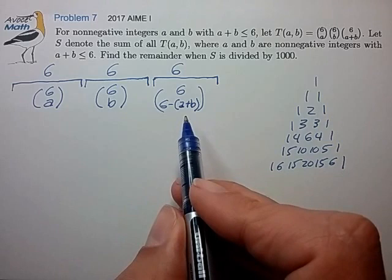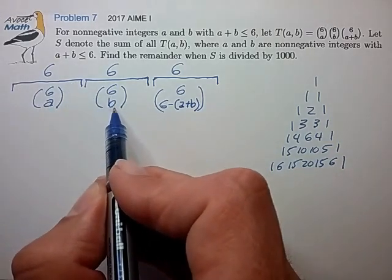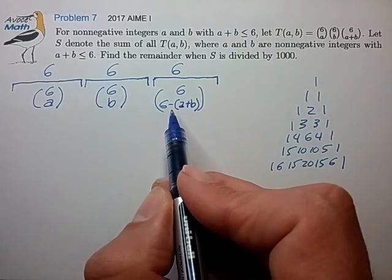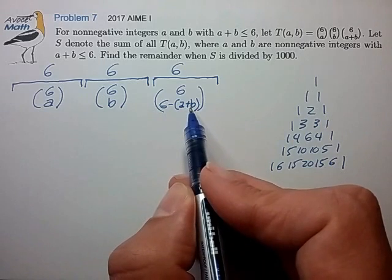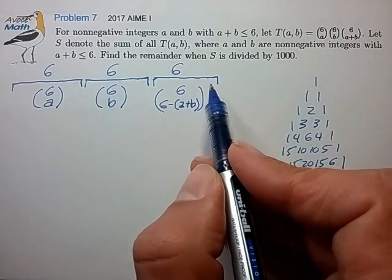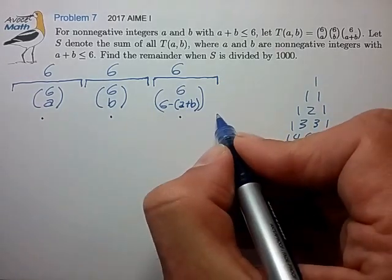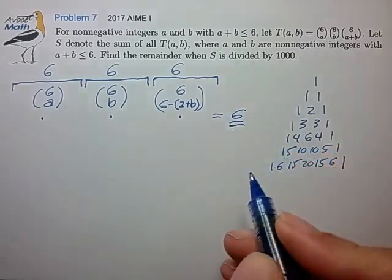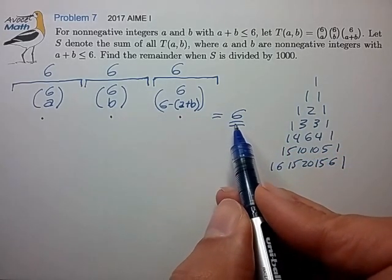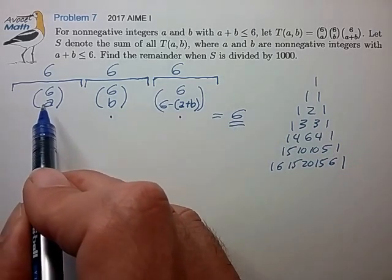What we have now is we're choosing a elements from this first group of six, b elements from this second group of six. And we're choosing the balance of six minus (a plus b) from this third group of six. So essentially the number of elements in each of these groups always adds up to six.